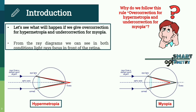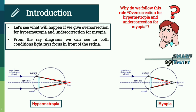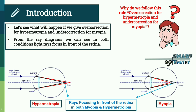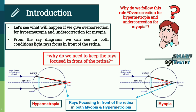So if we give overcorrection for hypermetropia and undercorrection for myopia, in both cases the rays of light focus in front of the retina instead of on the retina. A new question comes: why do we need to keep the rays focused in front of the retina instead of on the retina?